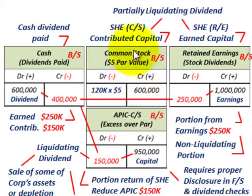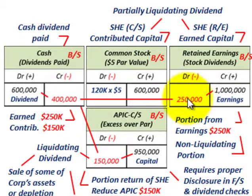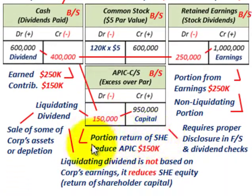The additional amount comes from the stockholders' equity account — the common stock account — which is the contributed capital that stockholders paid in. This is the liquidating dividend portion. We go to additional paid-in capital, which is the excess over par, and we have $950,000 there. So $150,000 of the $400,000 dividend comes from additional paid-in capital. We debit additional paid-in capital by $150,000, and that's the liquidating dividend portion.